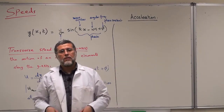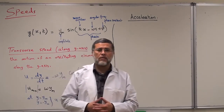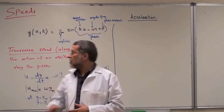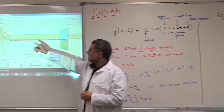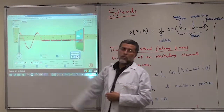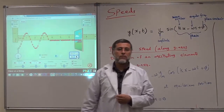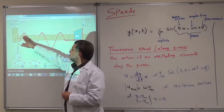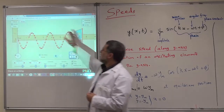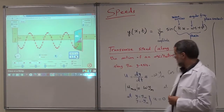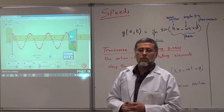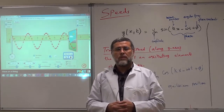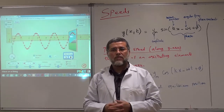We continue now with the kinematics of these particles which are moving. As you can see, the particles are moving up and down — we call them transverse waves. You can see the wave is moving at constant speed. There was an equation: v equals square root of tension over mu — that's the wave speed.